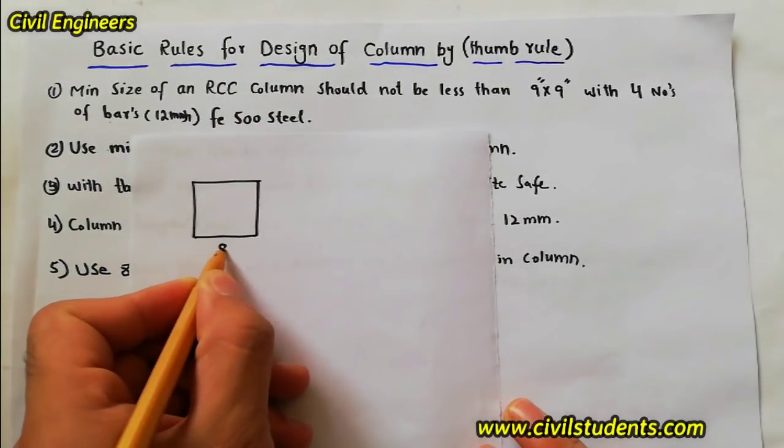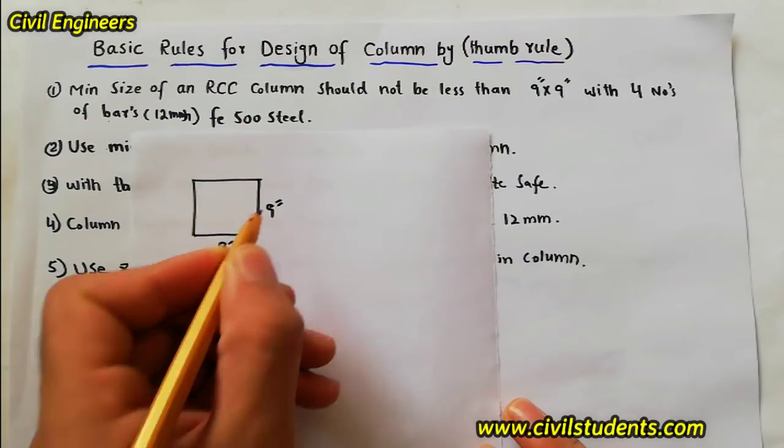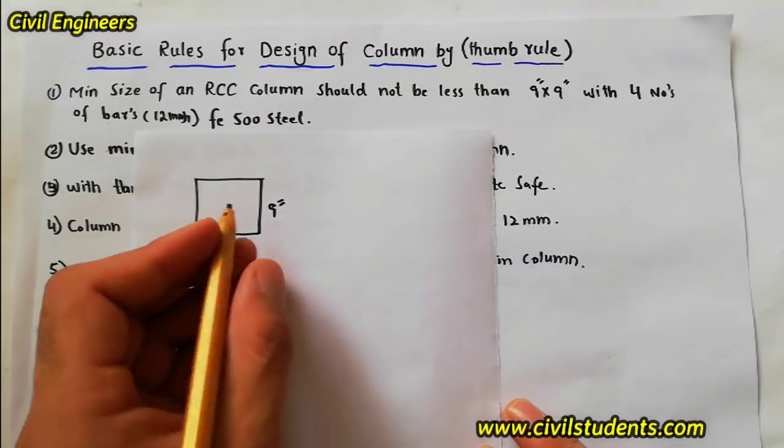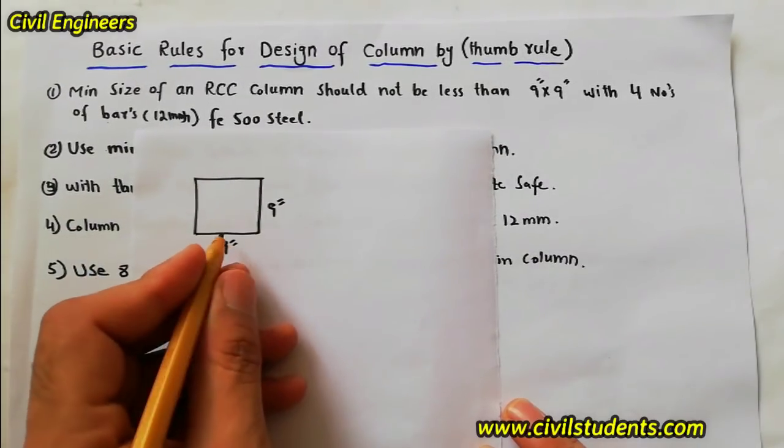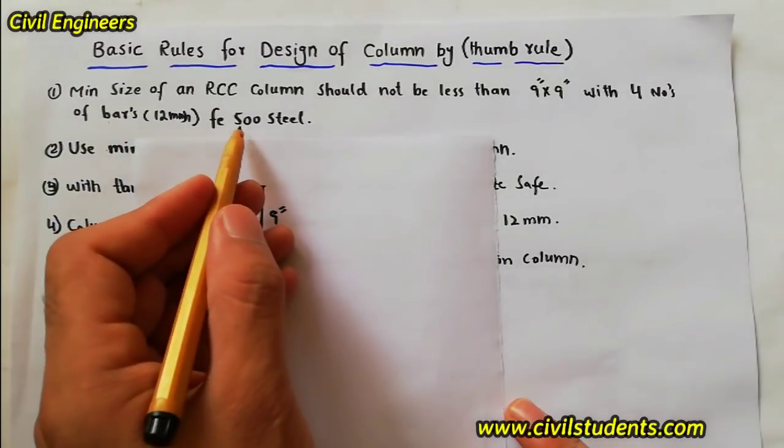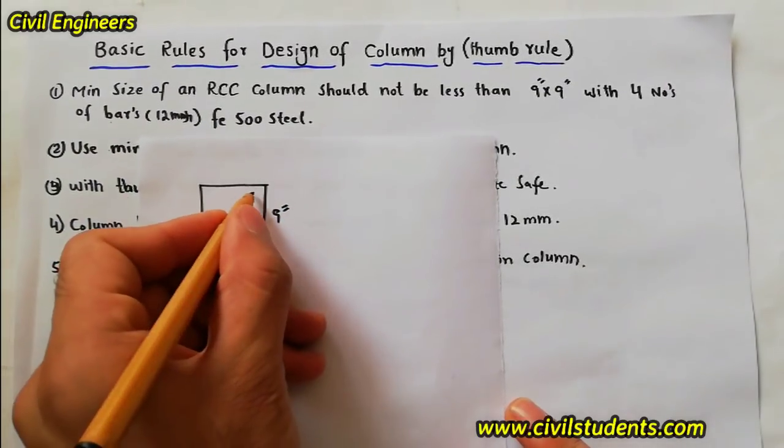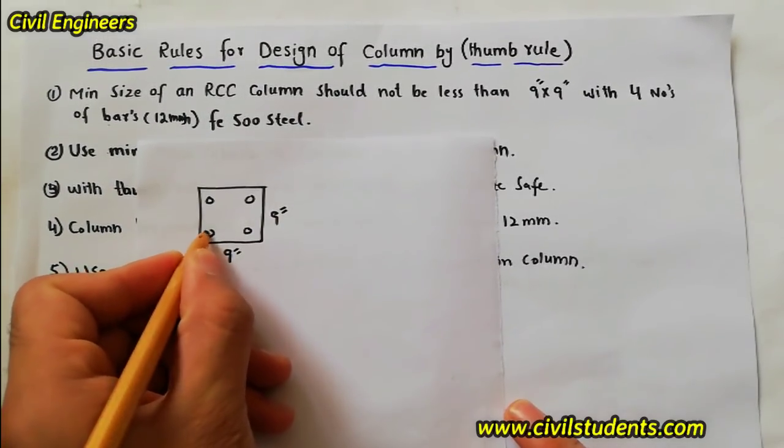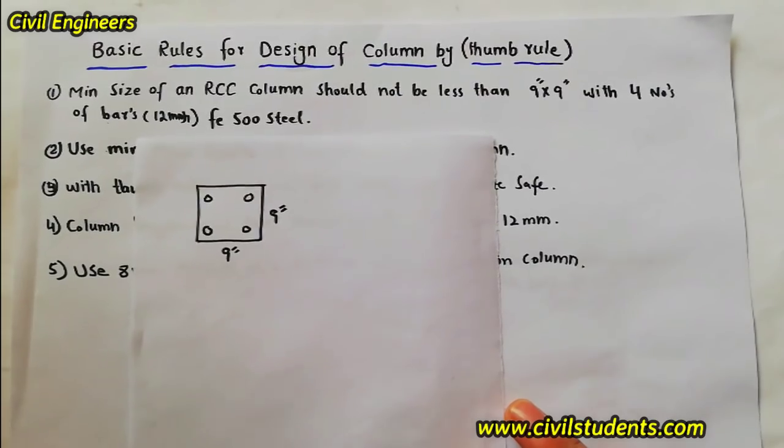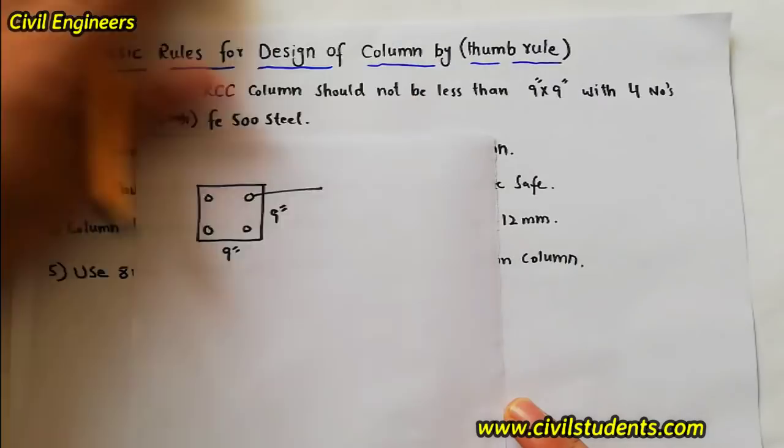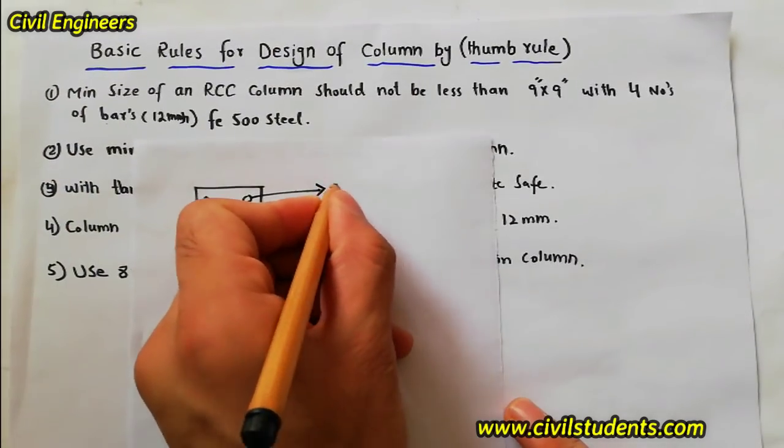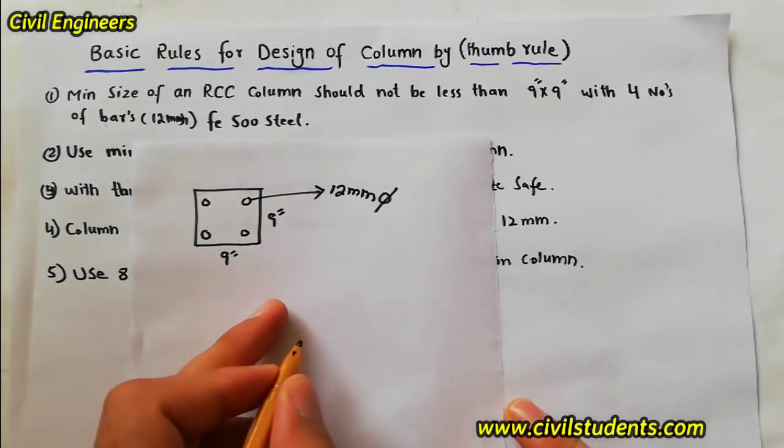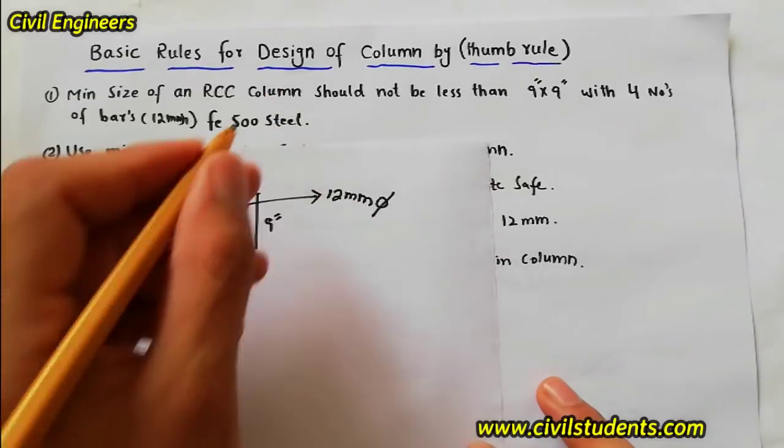It should not be less than 9 by 9 inch and four numbers of steel bar. So use four number of steel bar which should be 12mm diameter, and Fe500. It means that this is the strength of steel, 500 Newton per mm square.